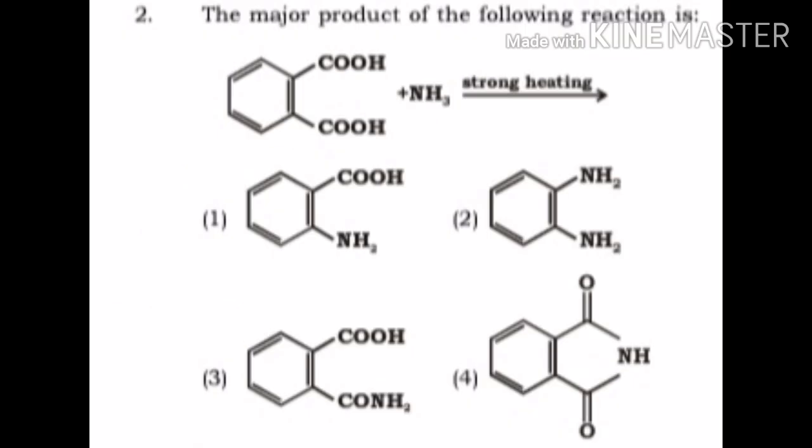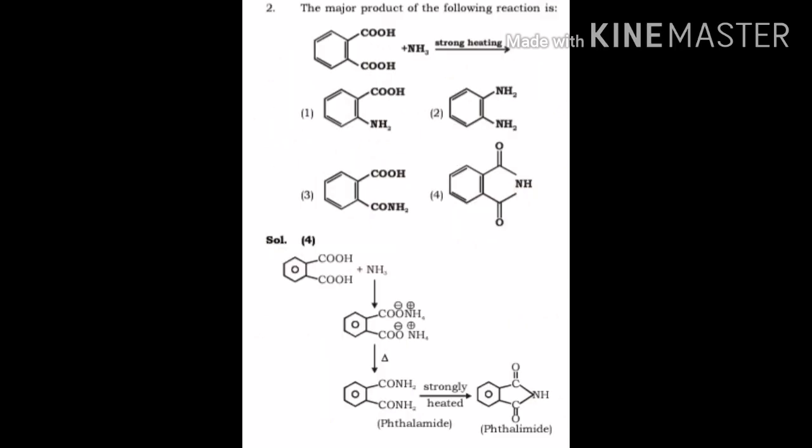Question number 2: the major product of the following reaction. When phthalic acid is treated with ammonia under the condition of strong heating, the most suitable answer of this question is 4, phthalimide.